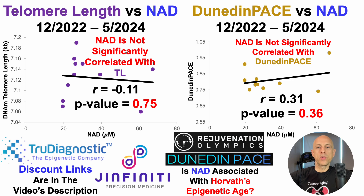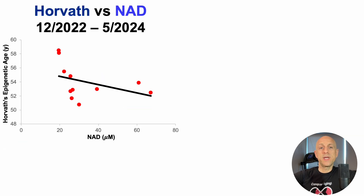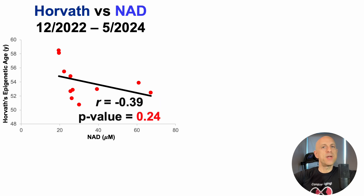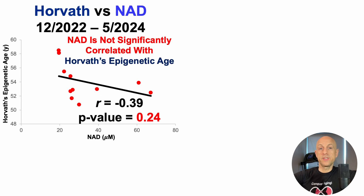What about the correlation for NAD with Horvath's epigenetic age? Now that trend line is going in the right direction — higher levels of NAD would be correlated with a younger Horvath's epigenetic age. But in terms of the stats, they're not significantly correlated. The p-value is 0.24, which is greater than 0.05, the threshold for statistical significance. So NAD is not significantly correlated with Horvath's epigenetic age.